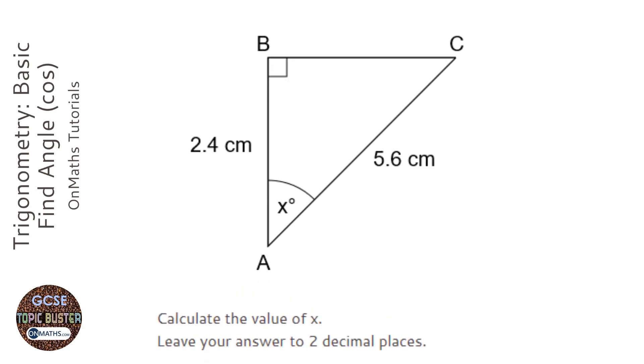This question has a right angle triangle with two lengths and an angle we're trying to find. This is going to be a trigonometry question because it involves an angle and two sides.